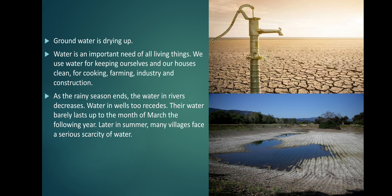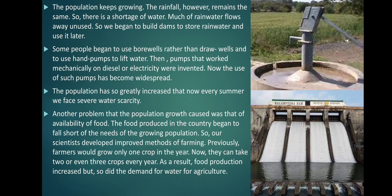As the rainy season ends, the water in rivers decreases and water in wells too recedes. Their water barely lasts up to the month of March the following year. Later in summer, many villages face a serious scarcity of water. The population keeps growing, but the rainfall remains the same, so there is a shortage of water.